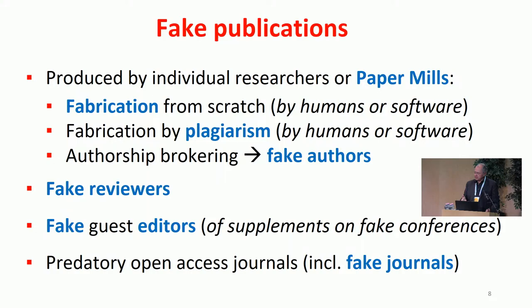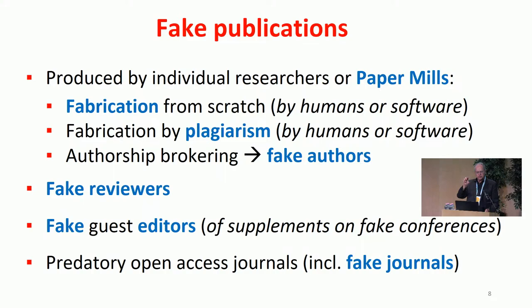And it works awfully well. These companies — these paper mills — sell authorships. You can find websites where you can buy a first, second, or last authorship on a paper on a no-cure-no-pay basis within a certain impact factor range. That is because people need it for their career. So the temptations and perverse incentives are out there. Fake reviewers: these paper mills have clever tricks to review their own manuscripts. They create a new email address for a well-known authority and handle that email address to review their own work.